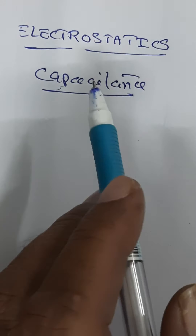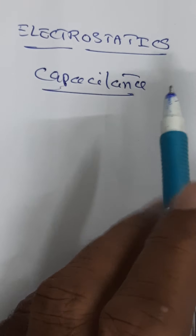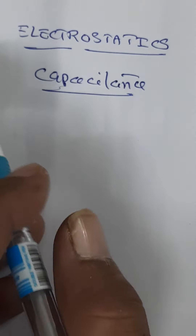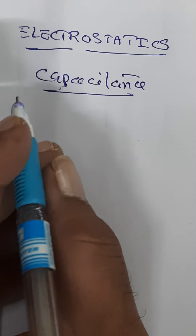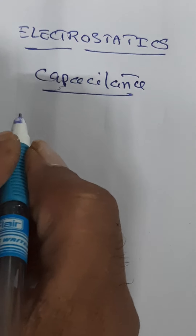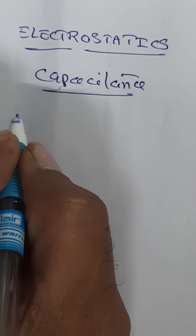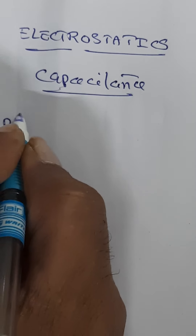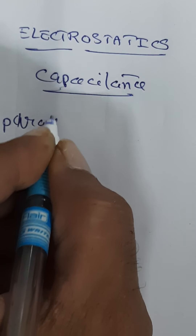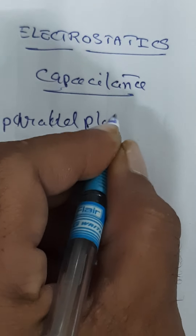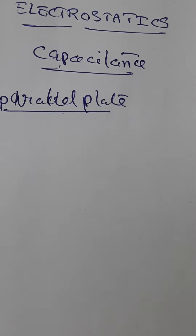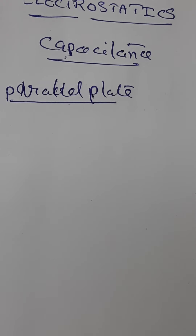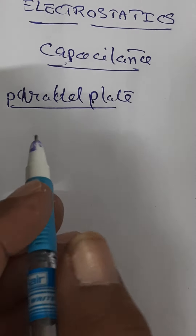In the last session under electrostatics, when we were discussing about capacitors, I briefly covered different types of capacitors depending on their shape. The most commonly used capacitor in many electrical appliances is the parallel plate capacitor. In the current session, we shall try to find out the capacitance of a parallel plate capacitor.